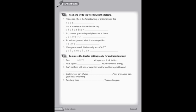2. This is usually the first meal of the day. What is the first meal of the day called? Write the word. 3. Pop stars or groups sing and play music in this. What is this event or possibly instrument called? Think about it. 4. Sometimes you can win this in a competition. 5. When you are well, this is usually about 36.6 degrees Celsius.